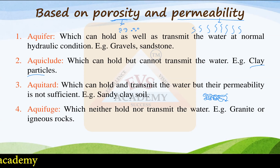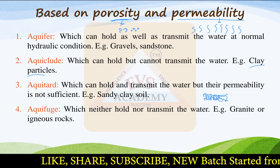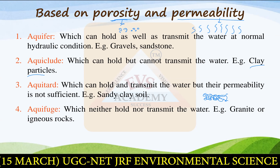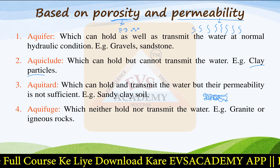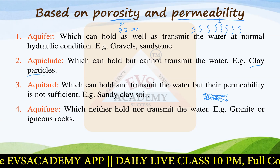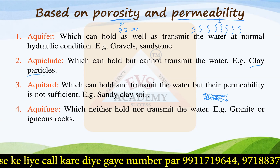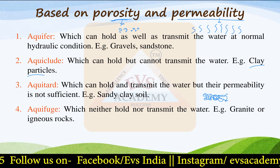The fourth type is aquifuge. Aquifuge are mediums or layers through which water cannot be held and also cannot be transmitted. An example is granite or igneous rocks, which are impermeable and do not hold any water. To summarize: aquifer can hold and transmit water at normal speed; aquiclude can hold but cannot transmit; aquitard has both holding and permeability but not in sufficient amounts; and aquifuge has neither transmission nor holding capacity.